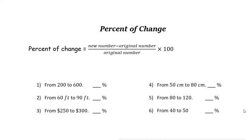Percent of change, or percent of increase or decrease, is a mathematical concept that represents the degree of change over time. To find the percent of increase or decrease, we use this formula: the new number minus the original number, over the original number, times 100.